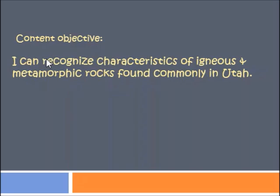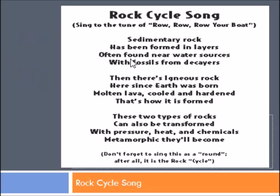Hi! Thanks for watching this PlayPosit. This PlayPosit will cover Science, Unit 6, Lesson 7, about igneous and metamorphic rocks. The objective is to recognize the characteristics of both igneous and metamorphic rocks that are found in Utah. We also have our Rock Cycle song.